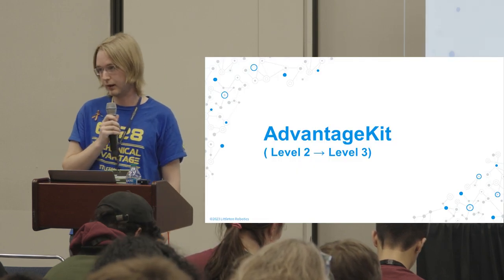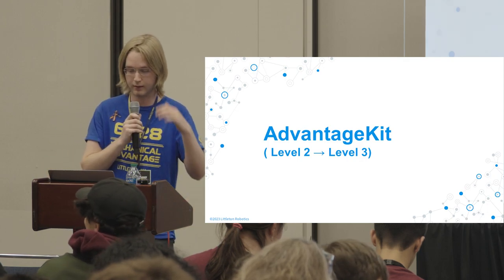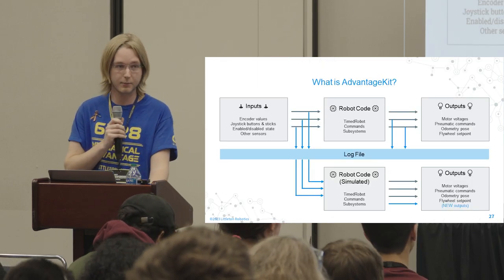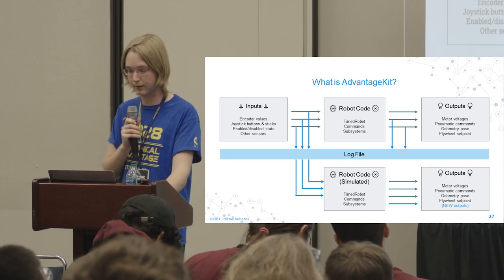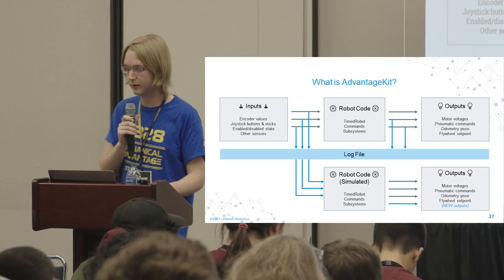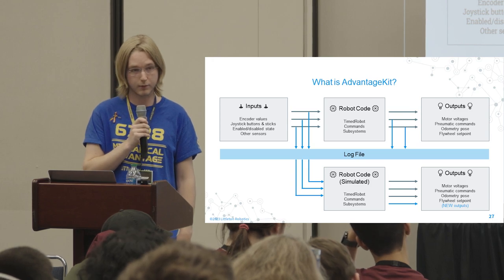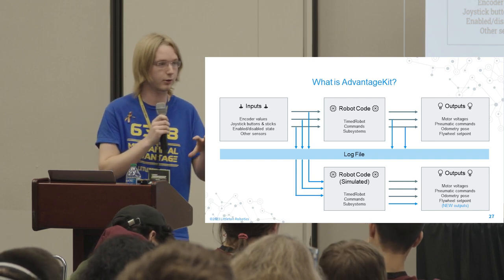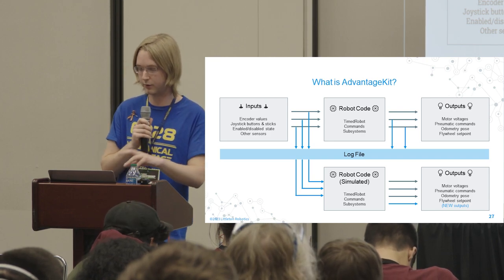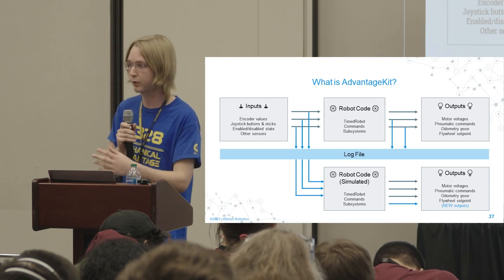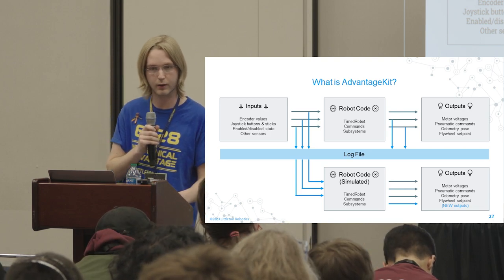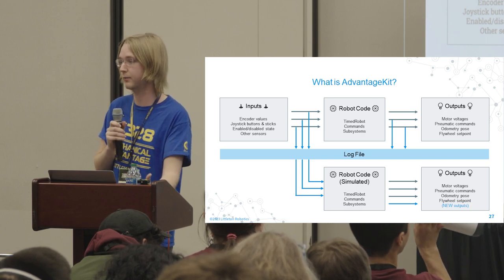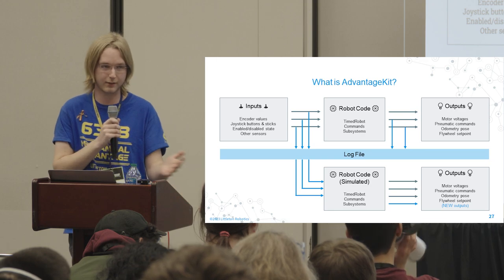Now let's move on to what's possible with level three logging — specifically AdvantageKit. To understand level three, we simplify our view of the robot code: at its most fundamental level, the robot code reads a set of inputs and produces a set of outputs. Inputs include encoder values, joystick buttons, whether the robot is enabled, and other sensors. Outputs include motor voltages, pneumatic commands, the odometry pose, or a flywheel setpoint.